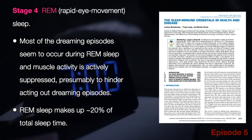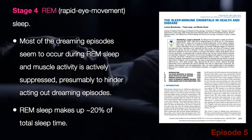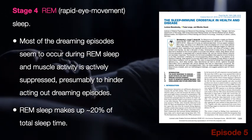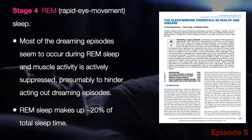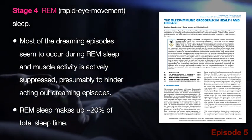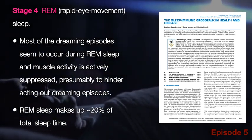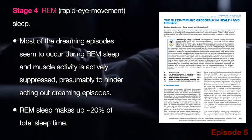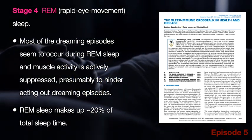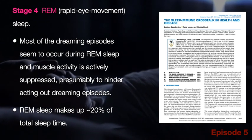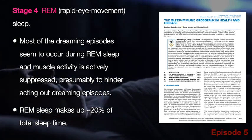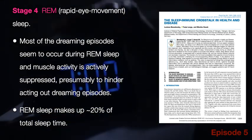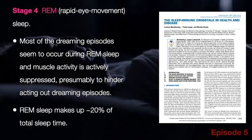REM sleep was initially called the dream sleep stage, but that is not really completely true because dreaming does occur in other stages of sleep. REM, or Rapid Eye Movement Sleep, makes up approximately 20% of total sleep time.